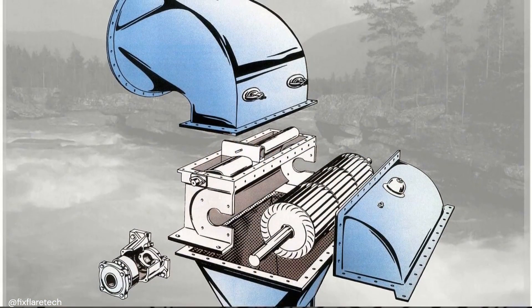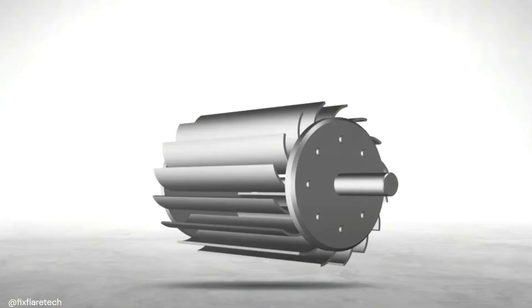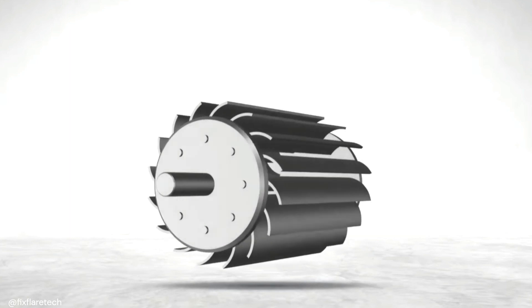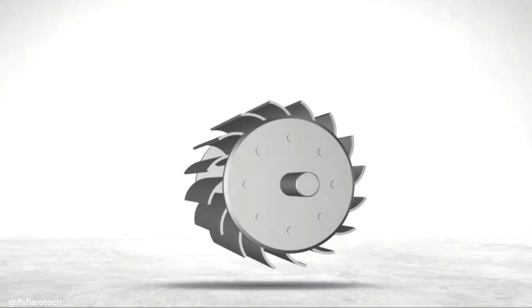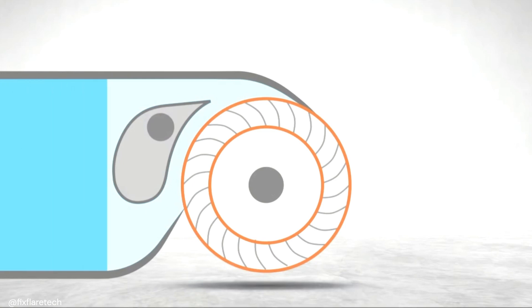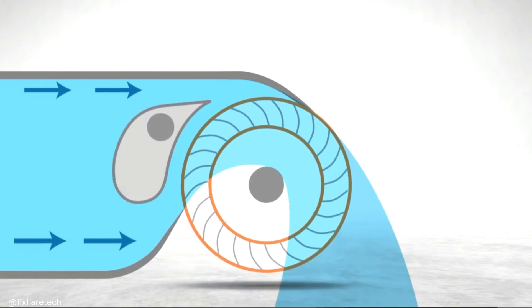At the heart of the cross-flow turbine is the runner, a cylindrical drum adorned with curved blades around its circumference. These blades, arranged in a radial pattern, form the pathway for water to flow and generate power.